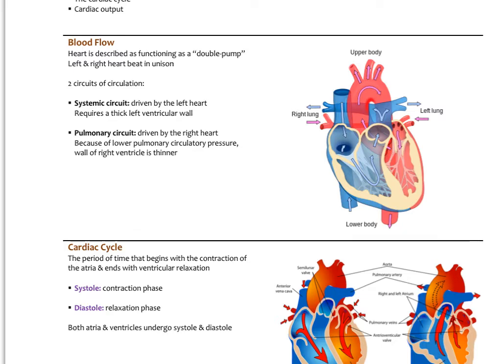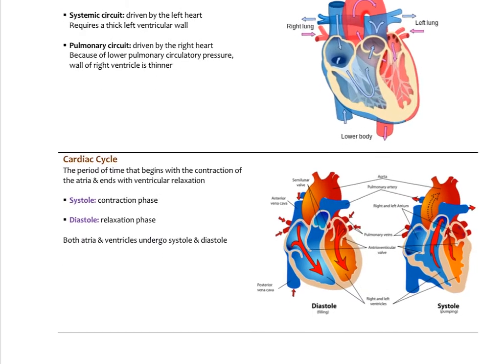There's also the pulmonary circuit driven by the right heart, which has a much lower blood pressure — the average is about 10 millimeters of mercury typically in the pulmonary circuit. So the right ventricle is a lot thinner and less muscular than the left ventricle.